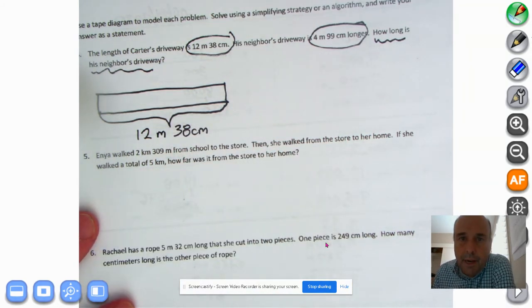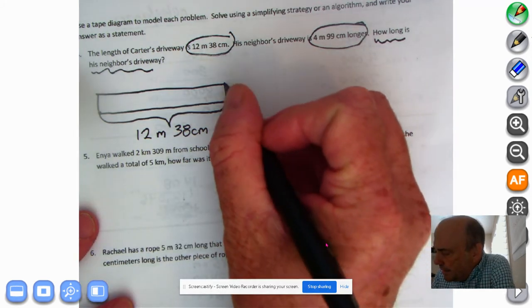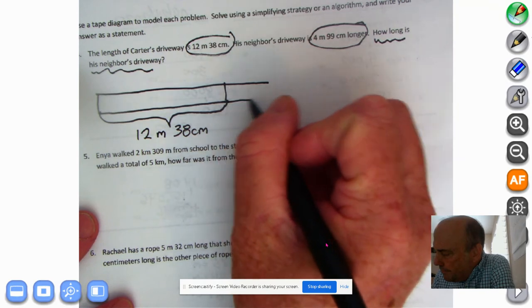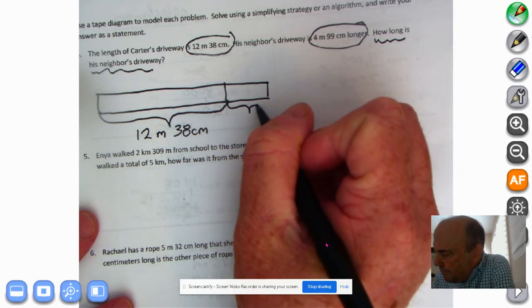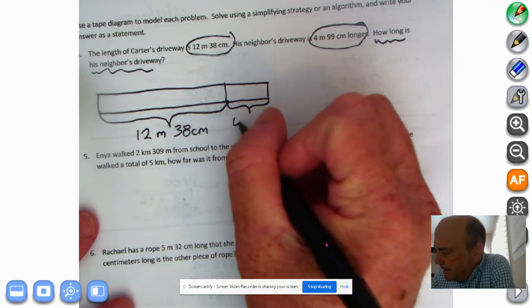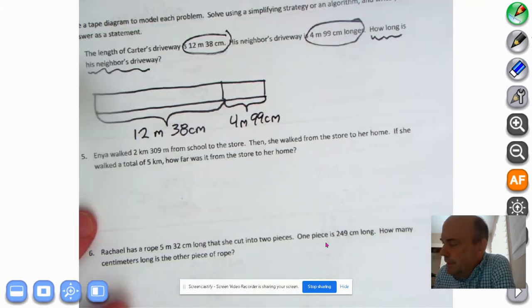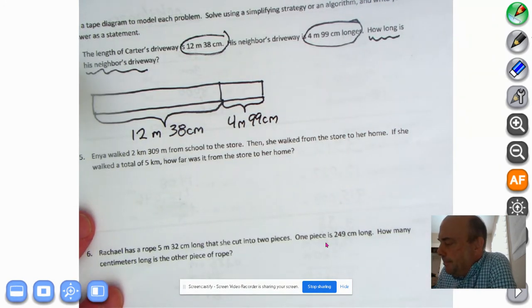All right, the neighbor's driveway, he's so envious of his neighbor's driveway. Is 4 meters, 99 centimeters, and longer. So let's go ahead and add these up.